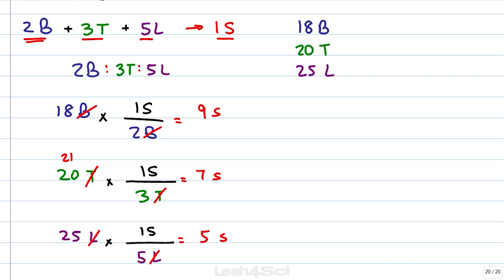Okay, so what does this tell us? It tells us that if we used up all the bread, assuming we had enough of everything else and bread was the limit, we can get up to 9 sandwiches just by the number of bread alone. If turkey was our limit and we had enough of everything else, using up all the turkey would give us approximately 7 sandwiches. And if lettuce is our limit and we have enough of everything else, using up all the lettuce gives us 5 sandwiches.